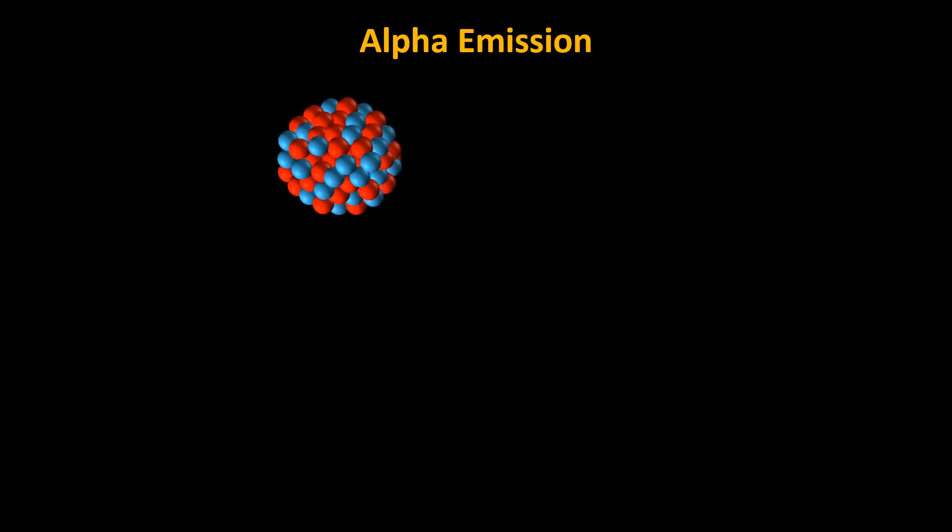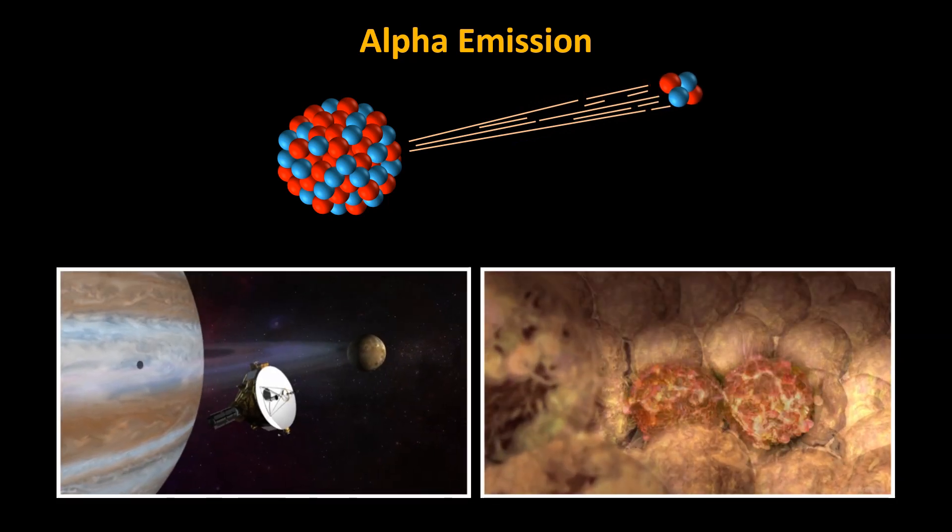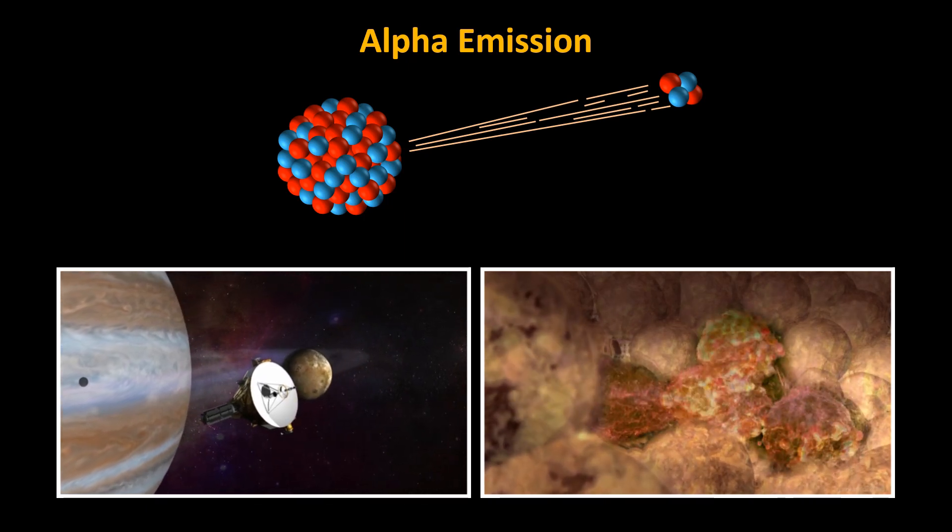In this lesson, we're going to look at a particular type of nuclear radiation called alpha radiation. Nuclides that emit alpha radiation, called alpha emitters, are used in various space probes to produce electricity and in certain types of cancer treatments.